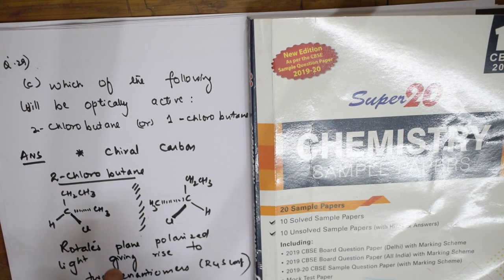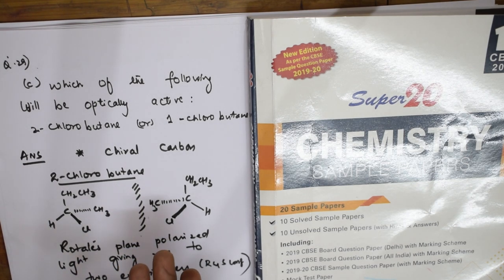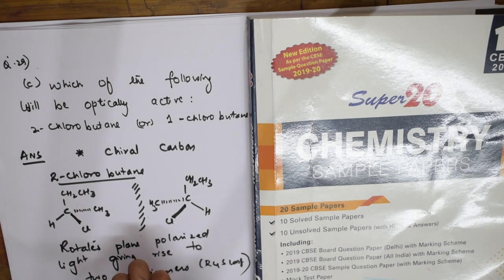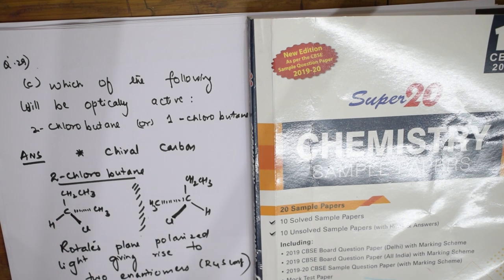Question 29 parts a, b, and c were all from the haloalkanes and haloarenes chapter — solubility, SN1/SN2 reactions, and optical activity all came from this same chapter.